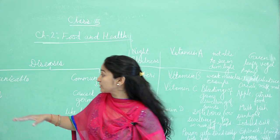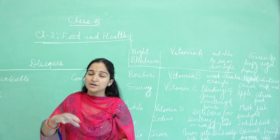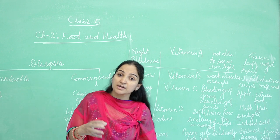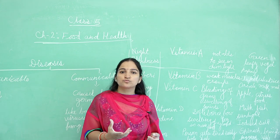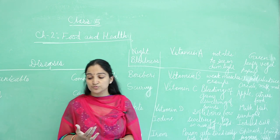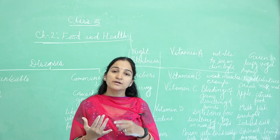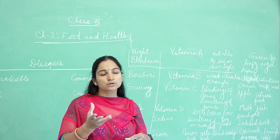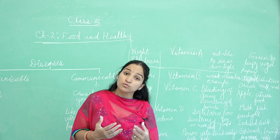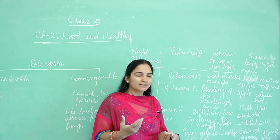It can be cured. For that, we need to eat Vitamin A-enriched food. Vitamin A-rich foods include green leafy vegetables, carrots, and all yellow-colored fruits such as mango and papaya — these are all very enriched in Vitamin A.